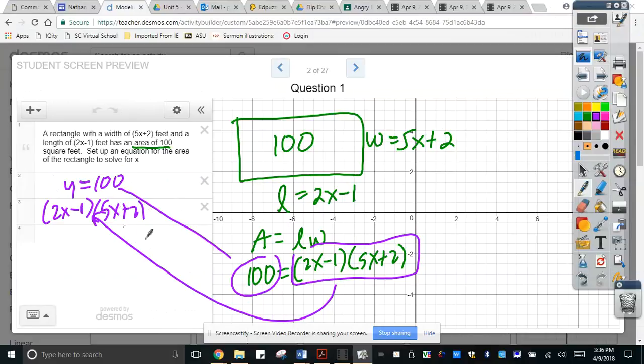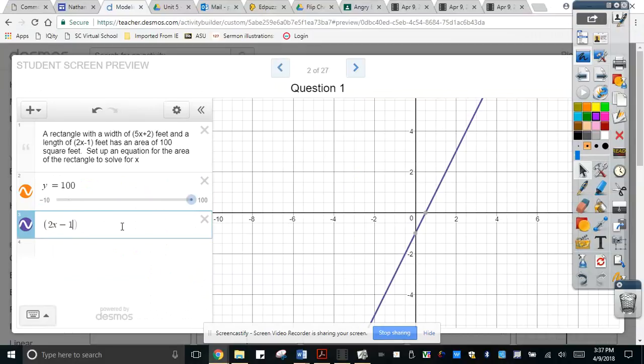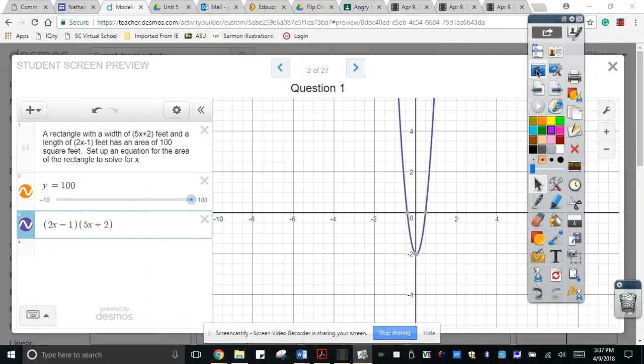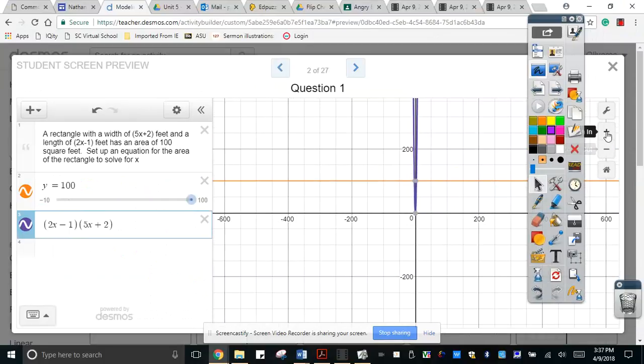Let's graph it. Let's see what will happen. Let me erase it. So type in y is equal to 100. Okay, you cannot see the graph yet, but you will later on. 2x minus 1 and 5x plus 2. All right, you see the graph there, but you're going to see the entire one. You probably need to minimize it. Okay, there you go.